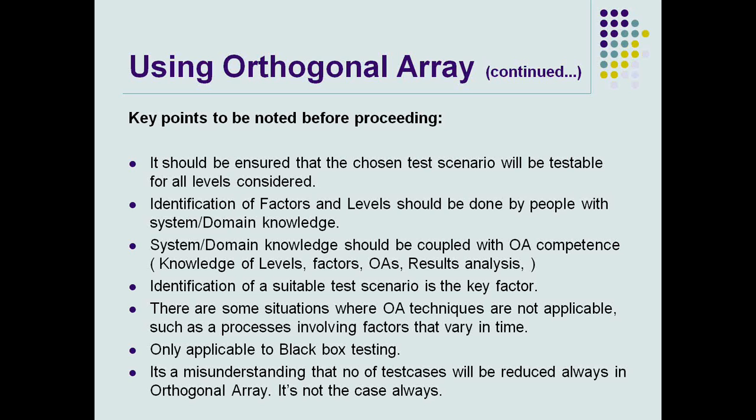Before getting into the actual samples, let's consider some key points. You should ensure that the chosen test scenario will be tested at all the levels, and the factors and levels should be identified by people with system or domain knowledge. These anomalies should be identified by someone with significant experience in their domain or well-versed with the tool. System modeling knowledge should be coupled with OA competence — that is, knowledge of the level, the factor, and the result analysis — so the person can properly interpret the output results.